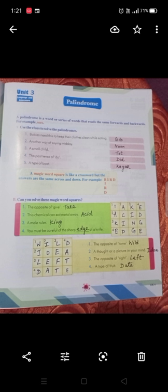The past tense of 'do' is 'did.' A type of boat is 'kayak' (K-A-Y-A-K) — both the spellings read the same forwards and backwards. A magic word square is like a crossword but the answers are the same across and down. For example: the opposite of give is 'take,' this chemical can eat metal away is 'acid,' a male ruler is 'king,' and you must be careful of the sharp edge of a 'knife' — the answer is 'edge' (E-D-G-E).